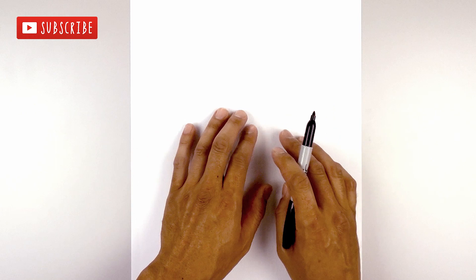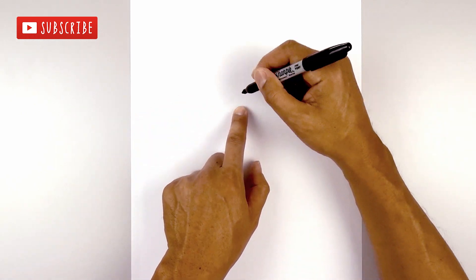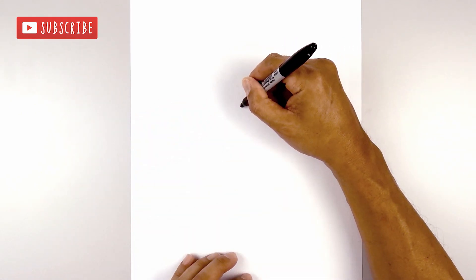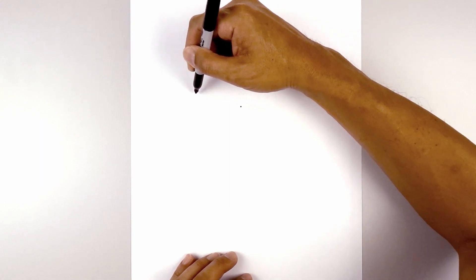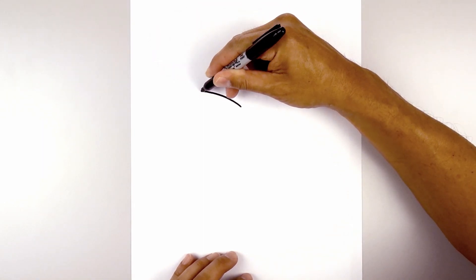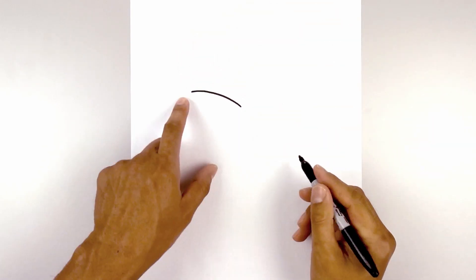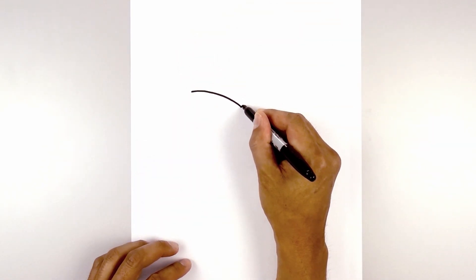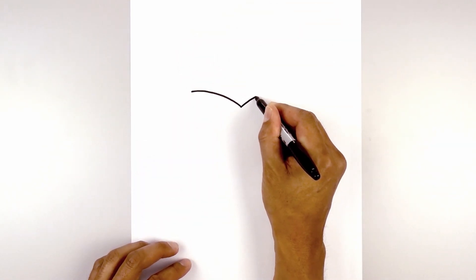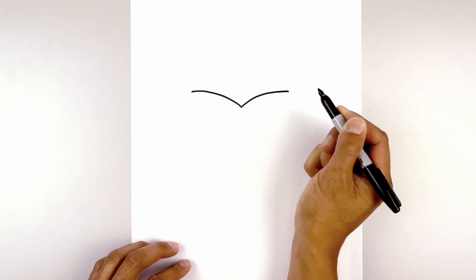The first thing we're going to do is get started with the front edge of the headwear. We start in the middle of our page with a point. From this point I want to curve up and out towards the left, curve up and then go straight out. Let's go back to the center and do the same thing on the right, curving up and then out.